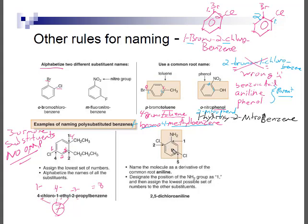When naming an aniline derivative, the NH2 carbon automatically becomes carbon 1 and we take the shortest path. For example, a benzene with an amino group at carbon 1 and chloro groups would be numbered to give the lowest locants: 2,5-dichloroaniline has a sum of 7, whereas going the other way would give 3,6-dichloroaniline with a sum of 9, so 2,5-dichloroaniline is correct.